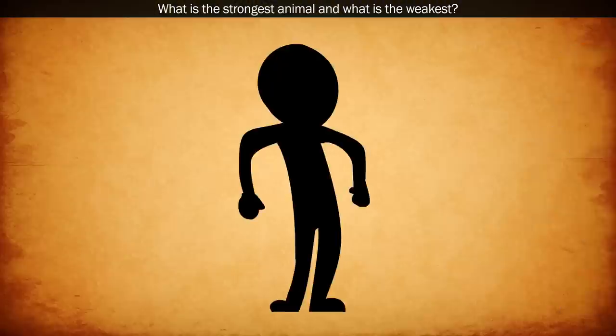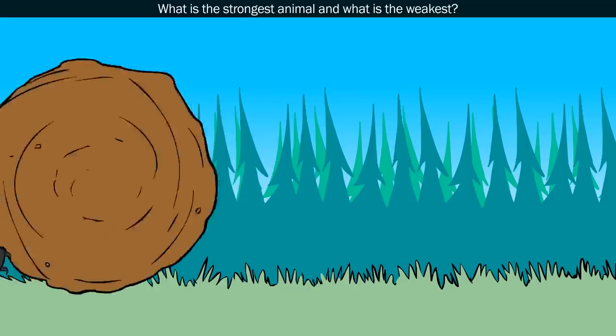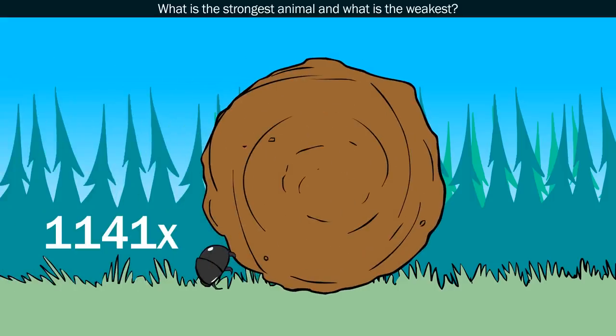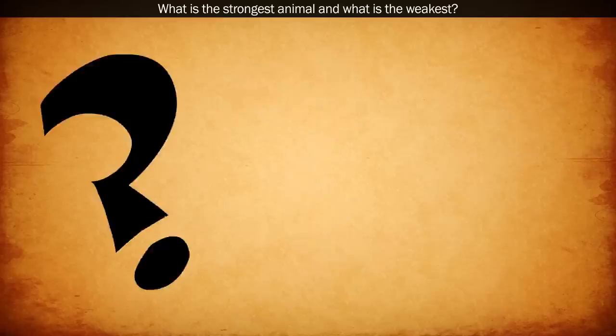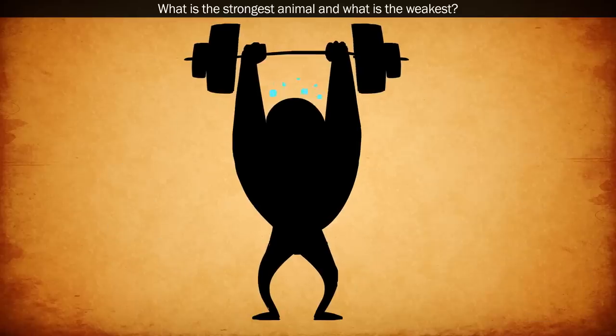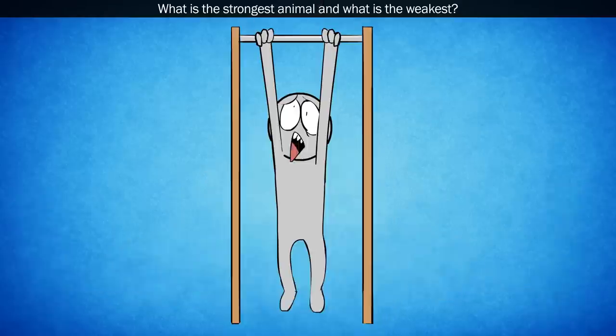If we're talking about proportional strength, then the world's strongest animal is the dung beetle, being able to pull roughly 1,141 times their own body weight. The weakest is a little harder to identify. Humans, in proportion to their size, are considered one of the weakest. The average untrained man will struggle to lift even his own body weight.